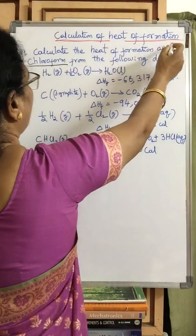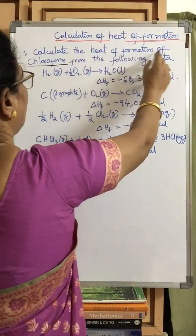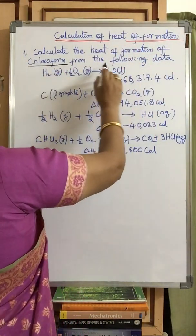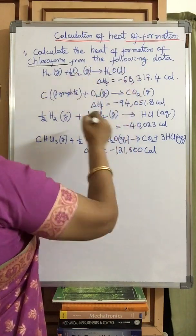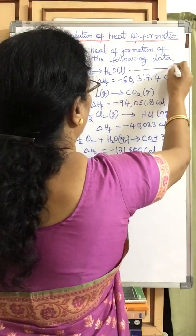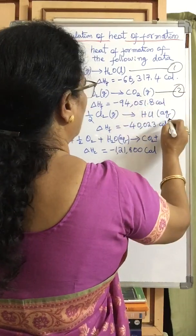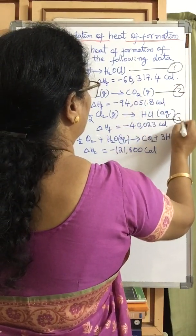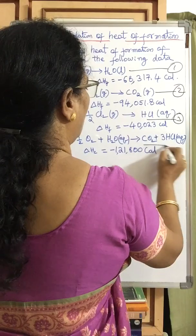Calculation of heat of formation. Calculate the heat of formation of chloroform from the following data. There are four equations that are given here: Equation 1, 2, 3 and 4.